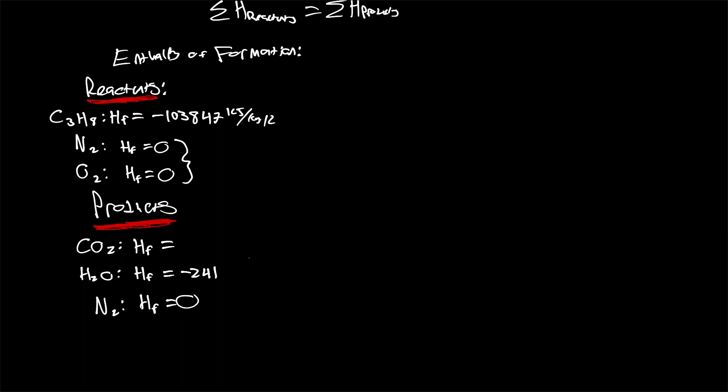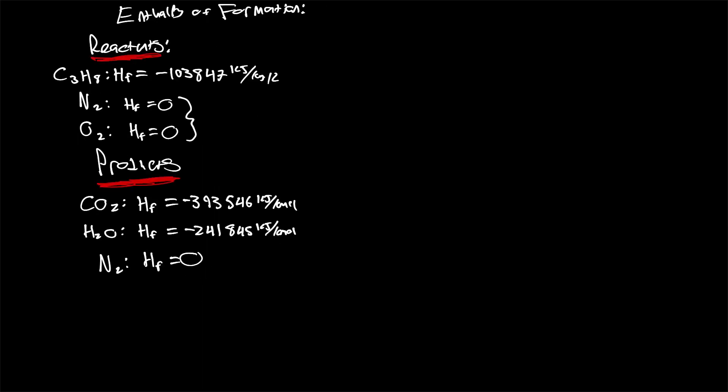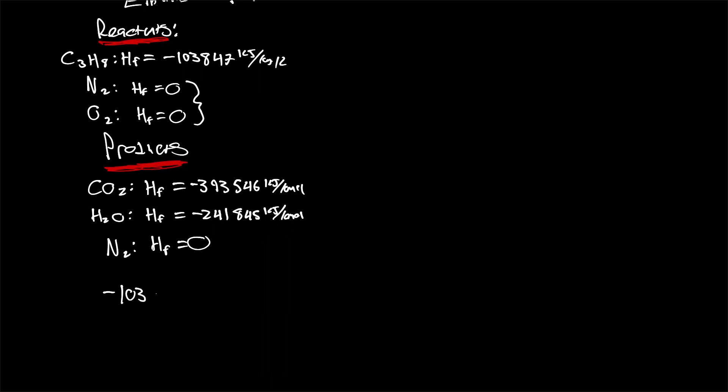And so finally, we can write that enthalpy balance equation that we had above there. We'll write that out using these enthalpies of formations and the change of enthalpy for a given temperature. Now, of course, we also need to note that we're multiplying by the mole fractions that we have. So for CO2, that's multiplied by 3. And note that for diatomic nitrogen, this enthalpy of formation is 0.